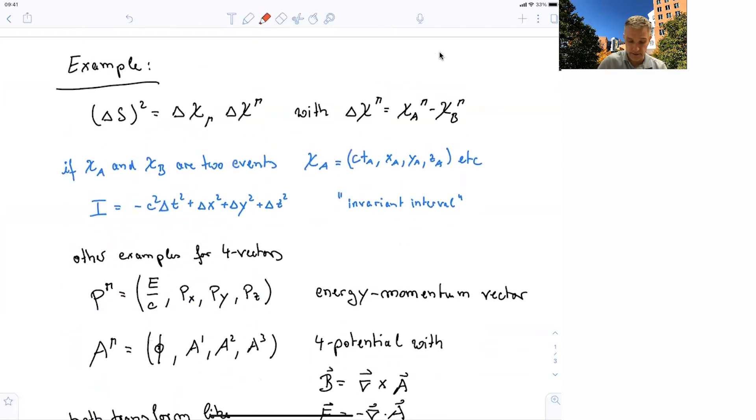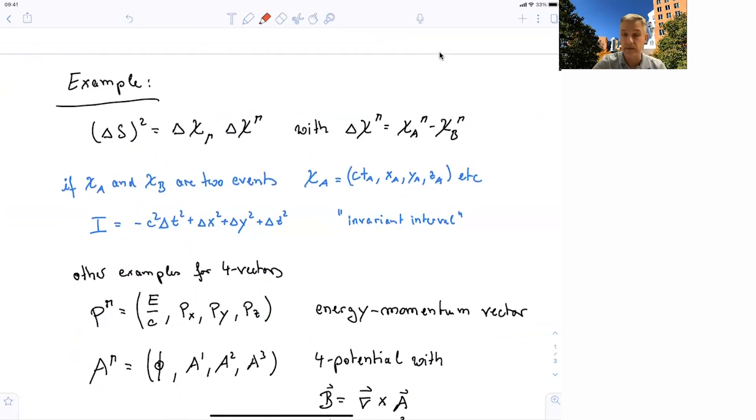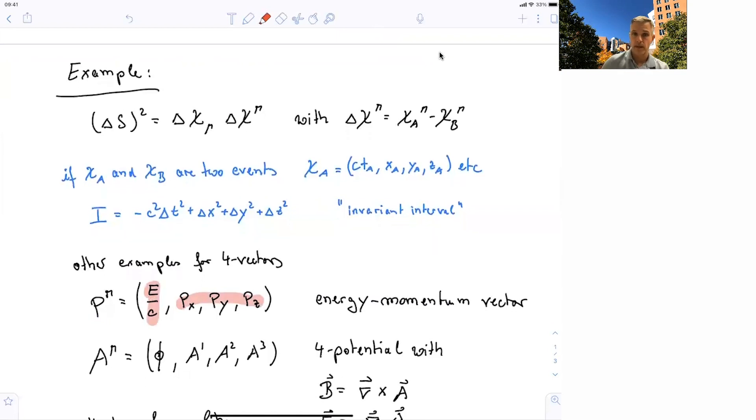But there are other examples for vectors. The first one we'll investigate some more in the next six sections to come is the energy-momentum four-vector, where we place in the zeroth component the energy and in the first, second, and third components the three-vector of the momentum.